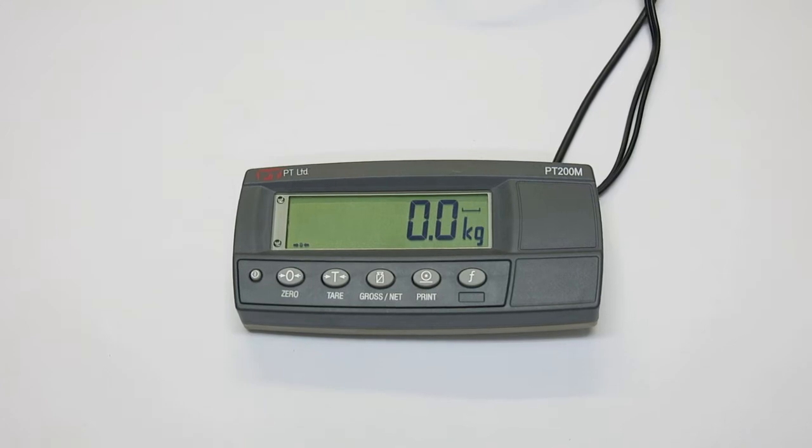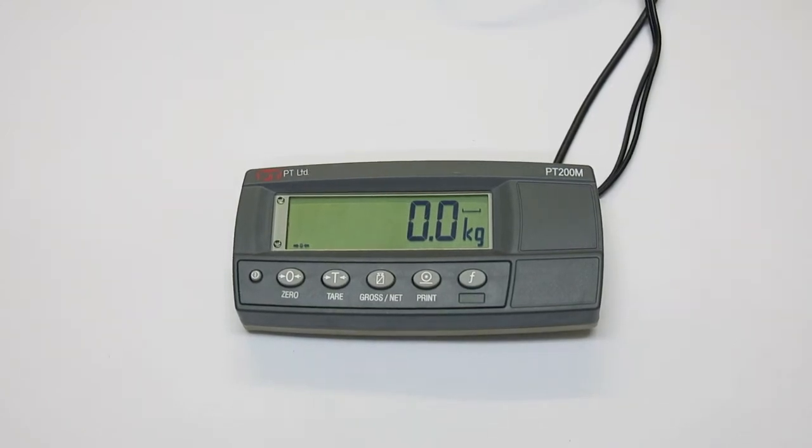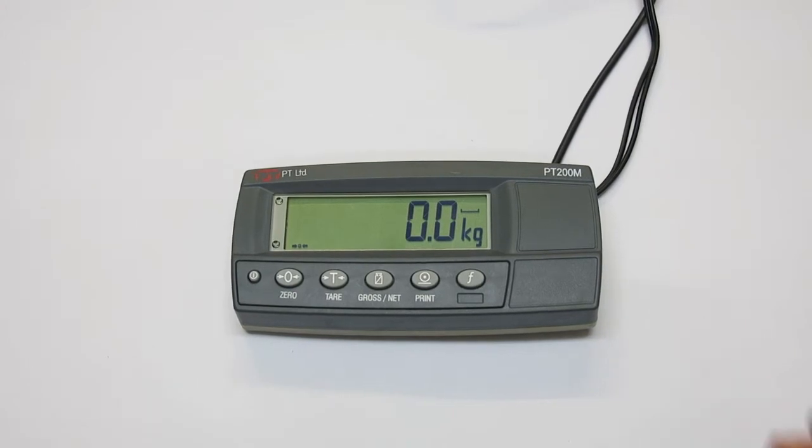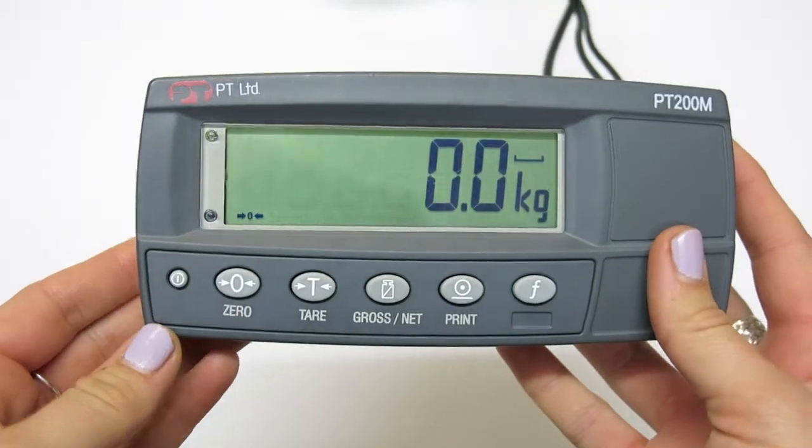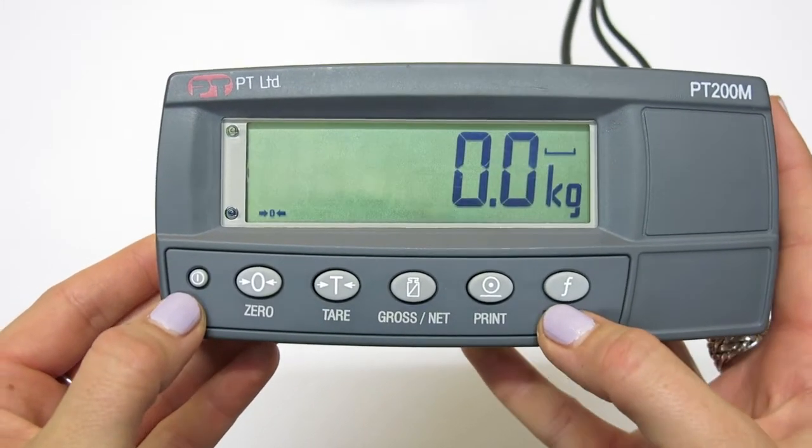The build option in the PT200M indicator is much like a function setting option. The build option is located in the setup menu of the indicator. To get to this, press and hold the power and function keys.